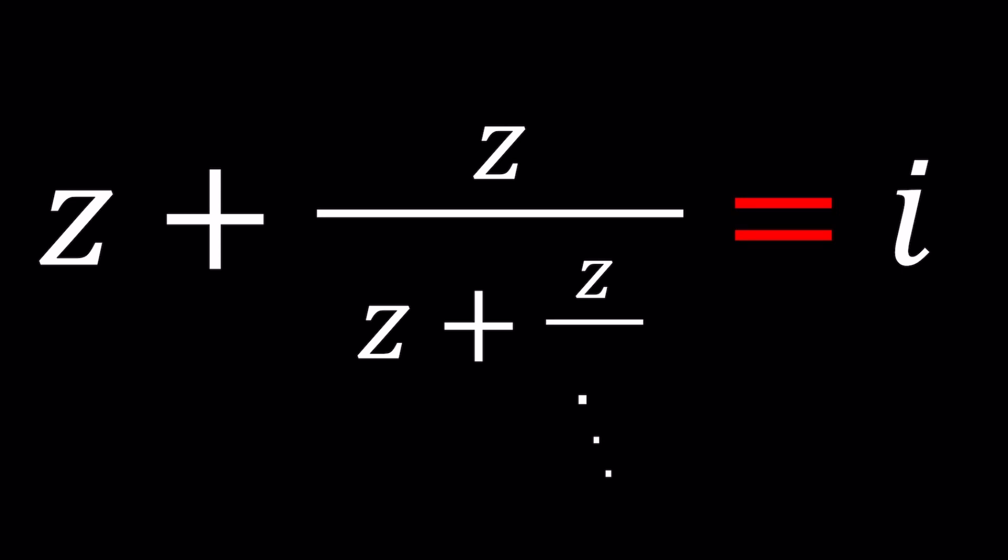So z is unknown, i is a constant. Notice that this expression contains itself infinitely many times. This is what I mean. Look at that, this part is the same as the original. Take a look at it: z plus z over z plus z. Obviously you can write more inside but it's the same thing.